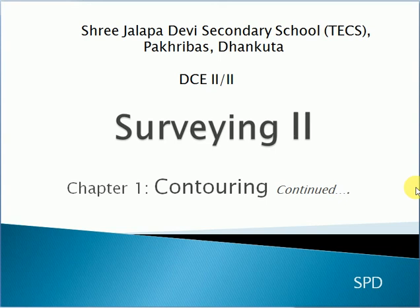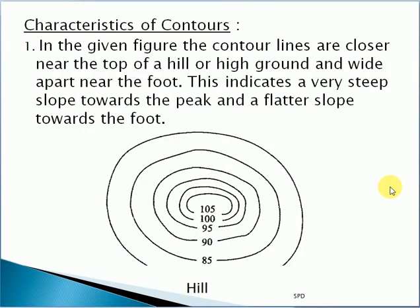I am going to talk about the characteristics of contour. In the given figure, the contour lines are closer near the top of a hill or high ground and wide apart near the foot. This indicates a very steep slope towards the peak and a flatter slope towards the foot.